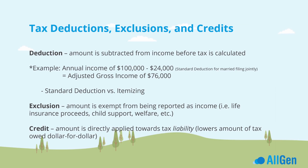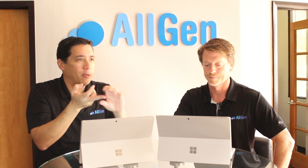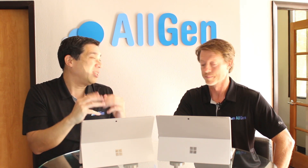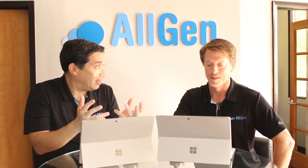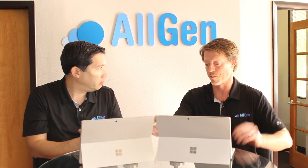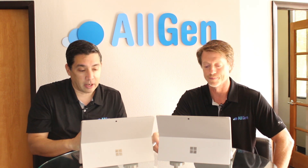The standard deduction — as of this recording, $24,000 for married and $12,000 for individual — is compared against itemizing. You should only itemize if your itemized deductions exceed the standard deduction. A few years ago the tax laws changed, and now over 90% of the population takes the standard deduction because the standard deduction is sufficient.